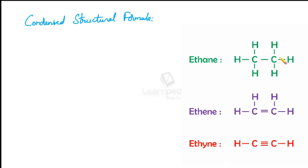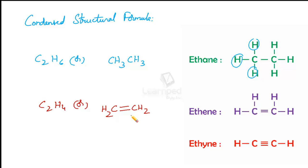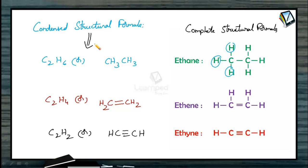For ethane, we can add all carbon and hydrogen atoms and write it as C₂H₆. Or we can write one carbon attached to three hydrogens as CH₃, and another carbon attached to three hydrogens as CH₃, omitting the dash between the two carbons — so CH₃CH₃. Similarly for ethene, adding all atoms gives C₂H₄, or separately CH₂=CH₂ — the double bond must always be shown. For ethyne, it is C₂H₂ or CH≡CH. So this method is the complete structural formula, and this is the condensed structural formula.